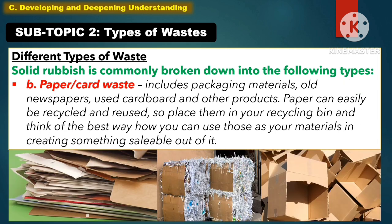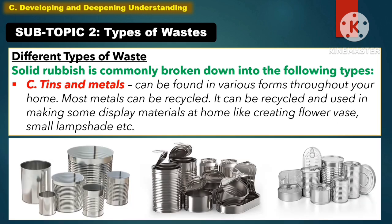Another type of solid rubbish is the paper or card waste. It includes packaging materials, old newspapers, used cardboard, and other products. Paper can easily be recycled and reused, so place them in your recycling bin and think of the best way to use those materials in creating something saleable. Another type of solid rubbish is tins and metals. Most metals can be recycled and used in making display materials at home, like creating flower vases and small lampshades.